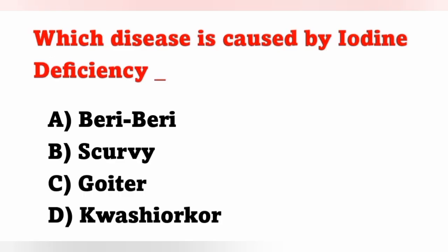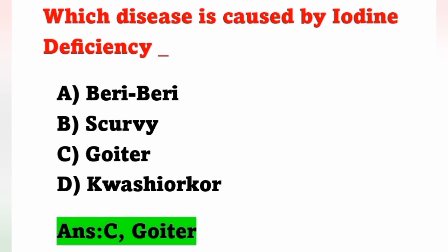Next question: Which disease is caused by iodine deficiency? Options: A) Beriberi, B) Scurvy, C) Goiter, D) Kwashiorkor. Iodine deficiency causes goiter. Option C is correct. Beriberi is caused by Vitamin B1 (thiamine) deficiency. Scurvy is caused by Vitamin C deficiency. Kwashiorkor is a type of malnutrition due to protein deficiency.